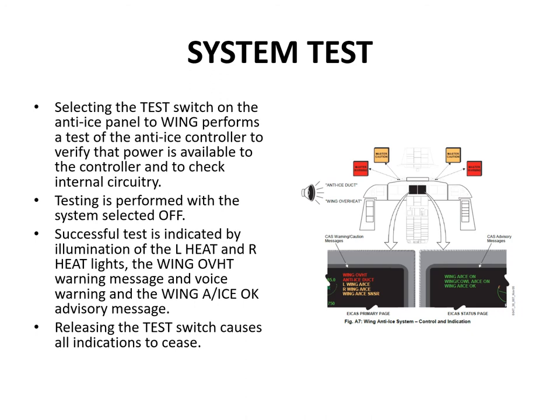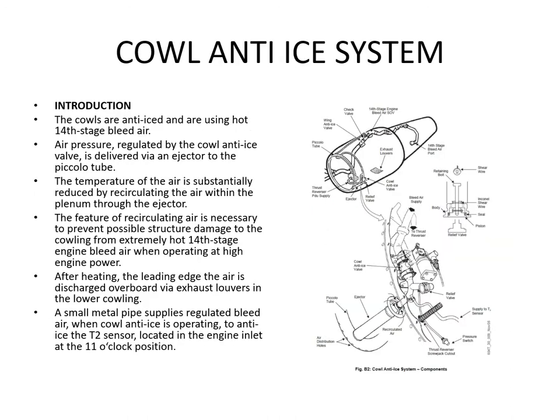There's a test switch on the anti-ice panel with two positions: wing or detector. Putting it to the wing position tests the anti-ice controller to verify power is available and check internal circuitry. You do the test with everything switched off. A successful test is indicated by the left and right heat lights illuminating, the wing overheat warning message, along with the voice message, and the wing anti-ice okay advisory message. Releasing the test switch returns everything to normal.